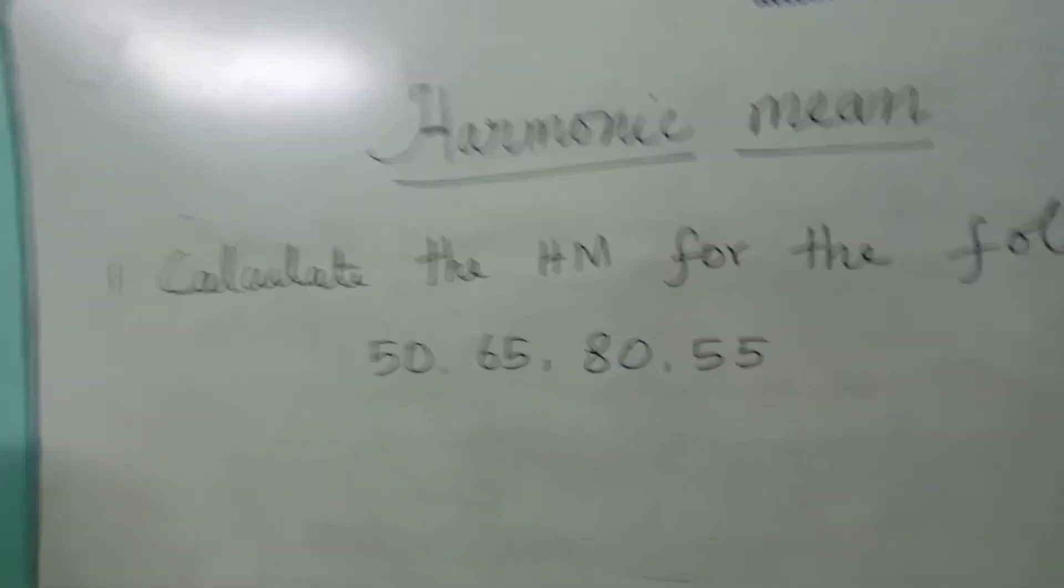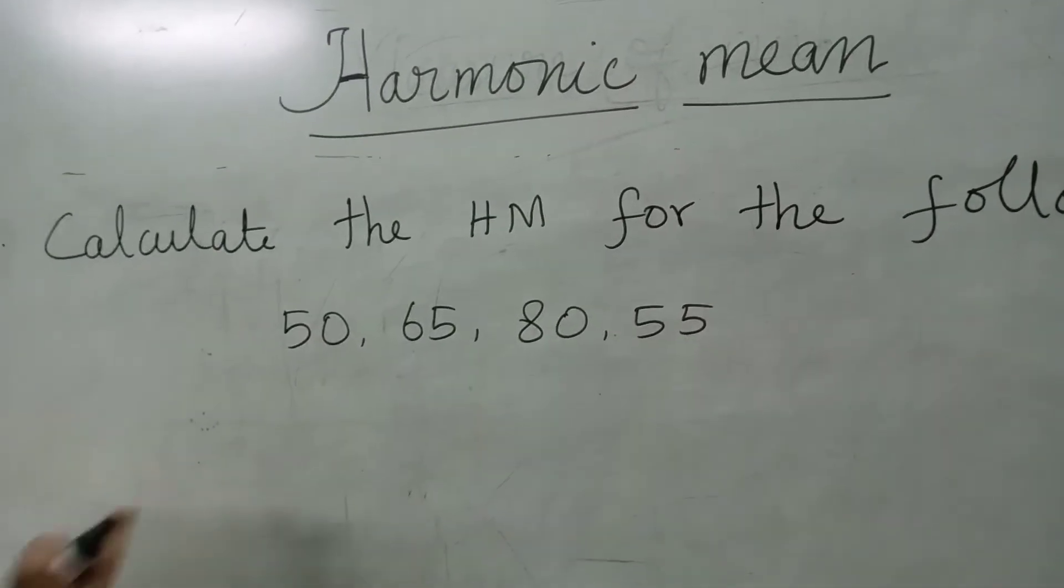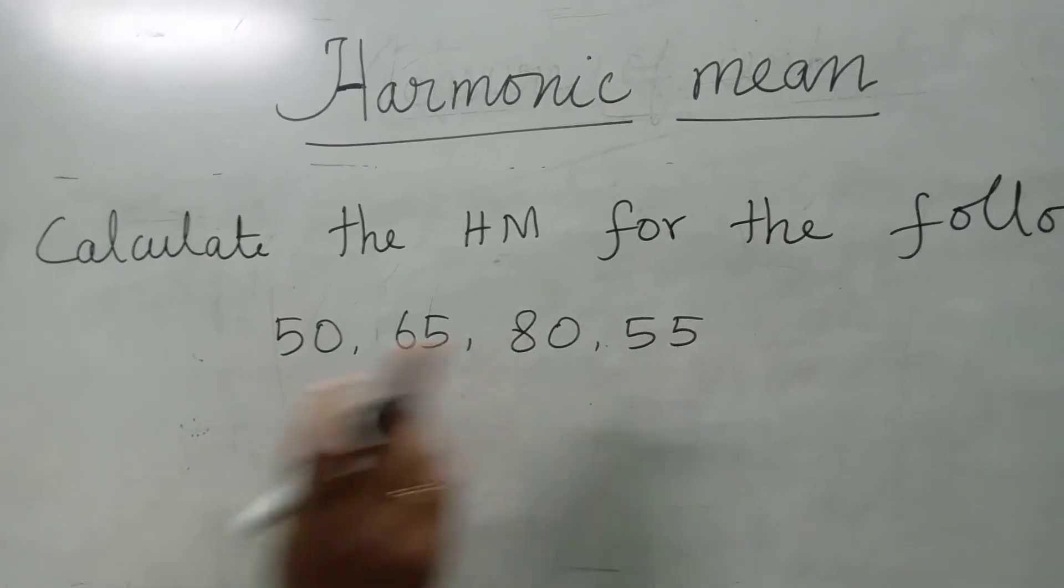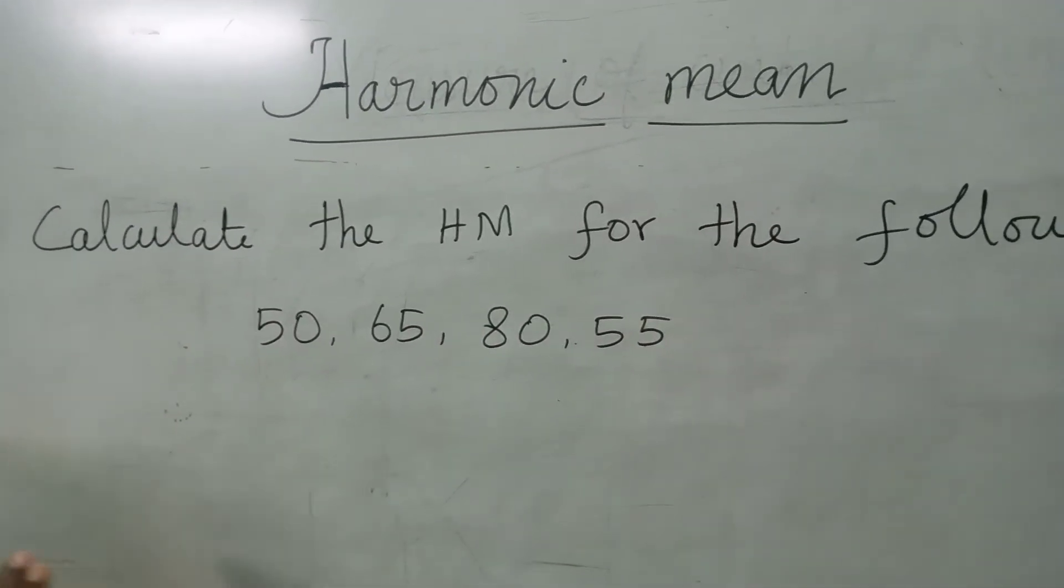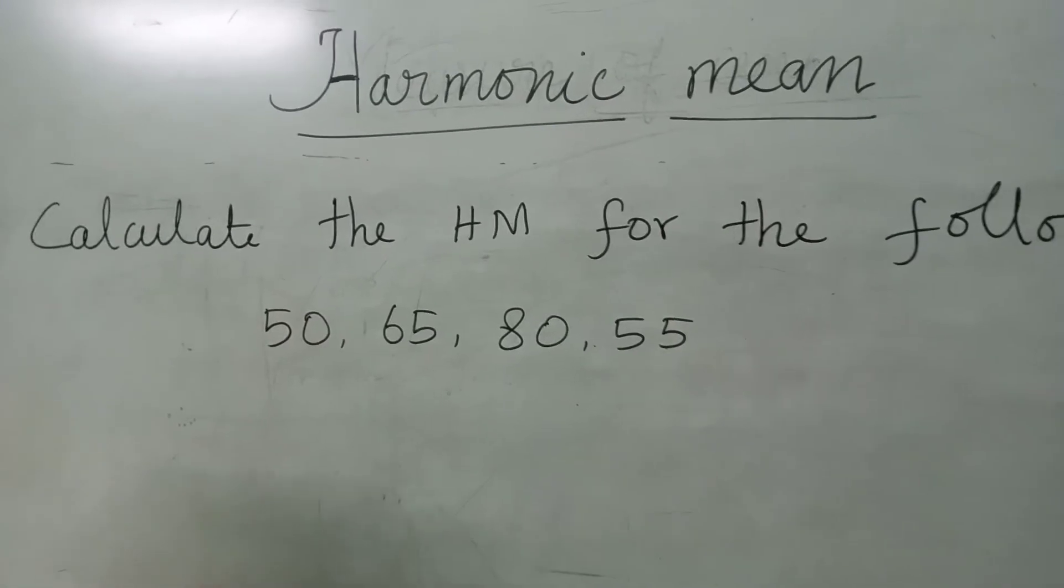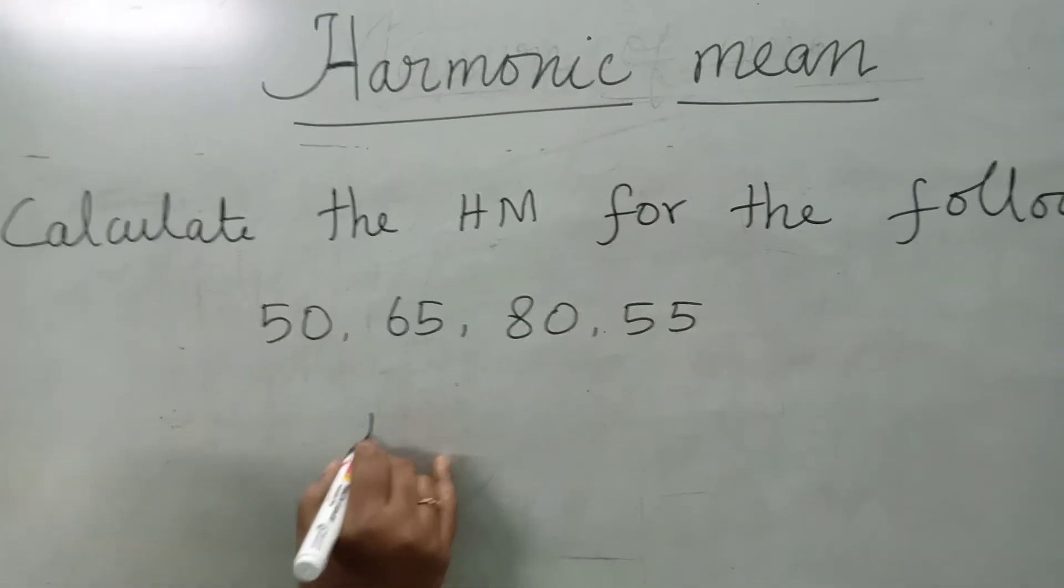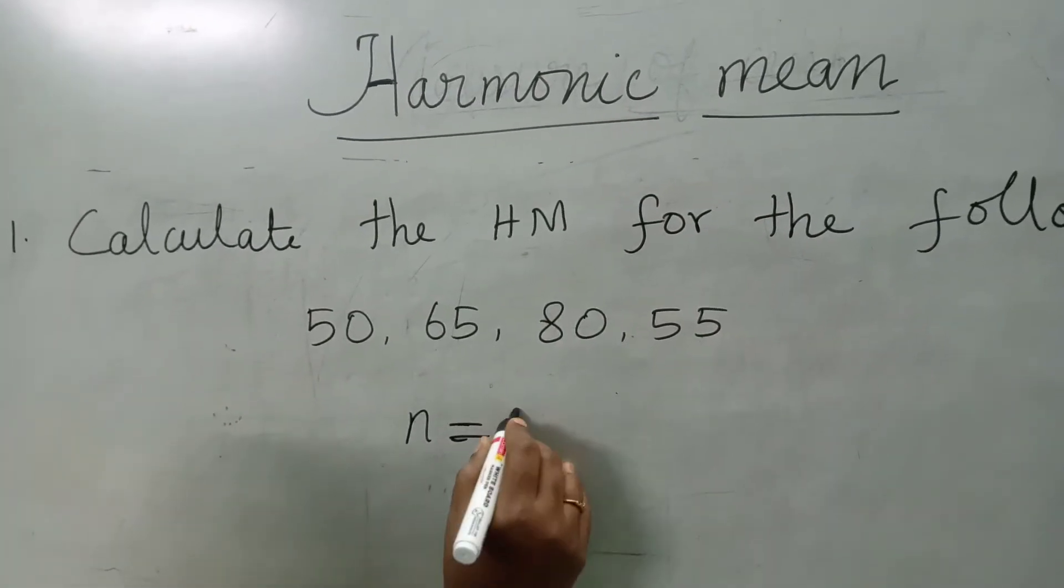This one is the example of raw data. Here the numbers are 50, 65, 80, 55. Here the data is not in ascending order. There is no need to change the data. Here number of data is 4. N is equal to 4 here.